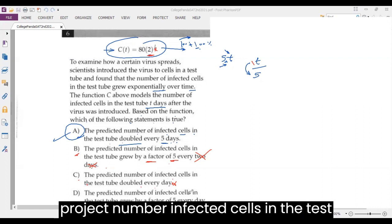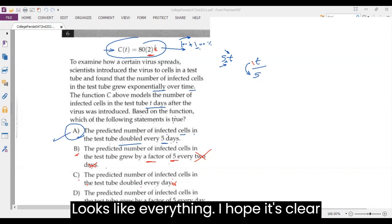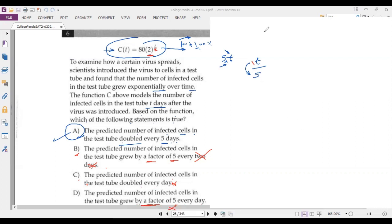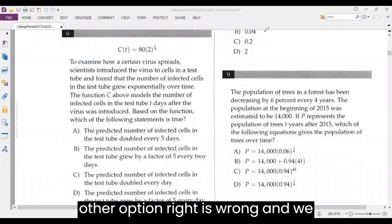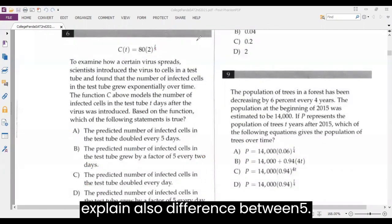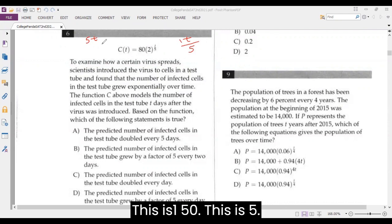Number D predicts the number of infected cells in the test tube grows by a factor of five every day. No, not five. I hope it's clear where we explain why the other options are wrong and we explain also the difference between 5C and t over 5 in the power.